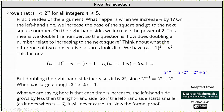Think about the difference of two consecutive square numbers. If we consider the square of n plus 1 minus n squared and factor this as a difference of squares, we have the quantity n plus 1 minus n times the quantity n plus 1 plus n. Simplifying, the first factor simplifies to 1 and the second factor simplifies to 2n plus 1, giving us a difference of 2n plus 1.